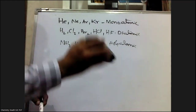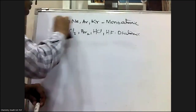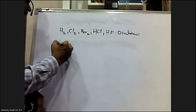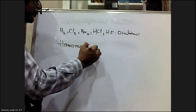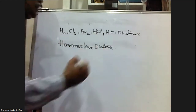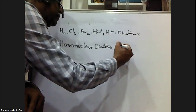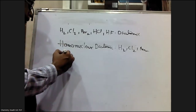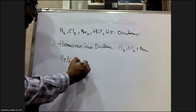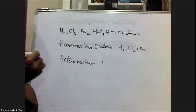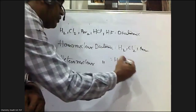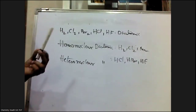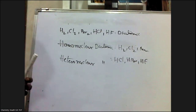Diatomic molecules are again classified into two types. First, homonuclear diatomic molecules — these are diatomic molecules formed between two atoms of the same kind. For example, H₂, Cl₂, Br₂, and O₂ are all homonuclear diatomic molecules. Second, heteronuclear diatomic molecules — these are formed between two different atoms, such as HCl, HBr, and HF.